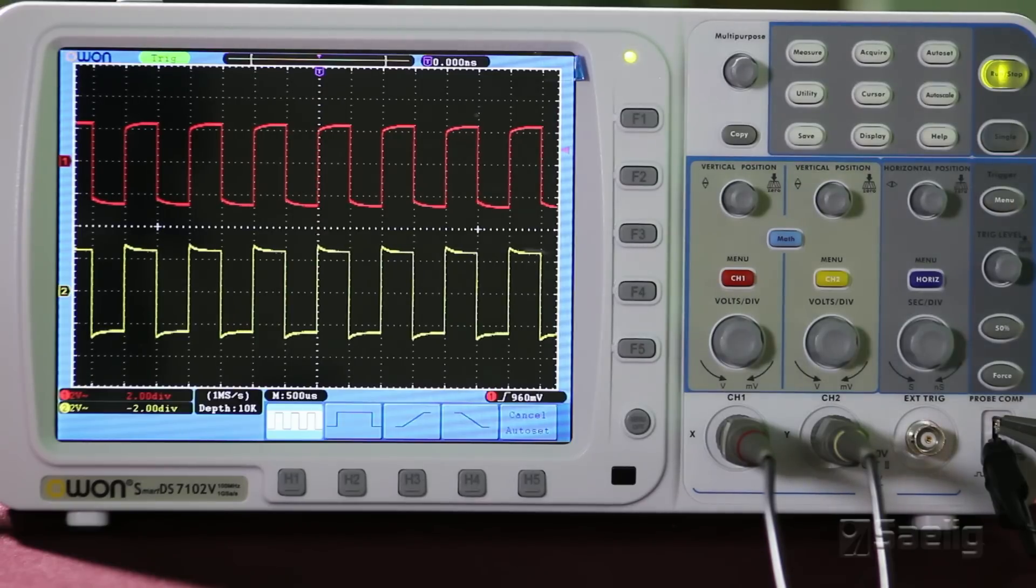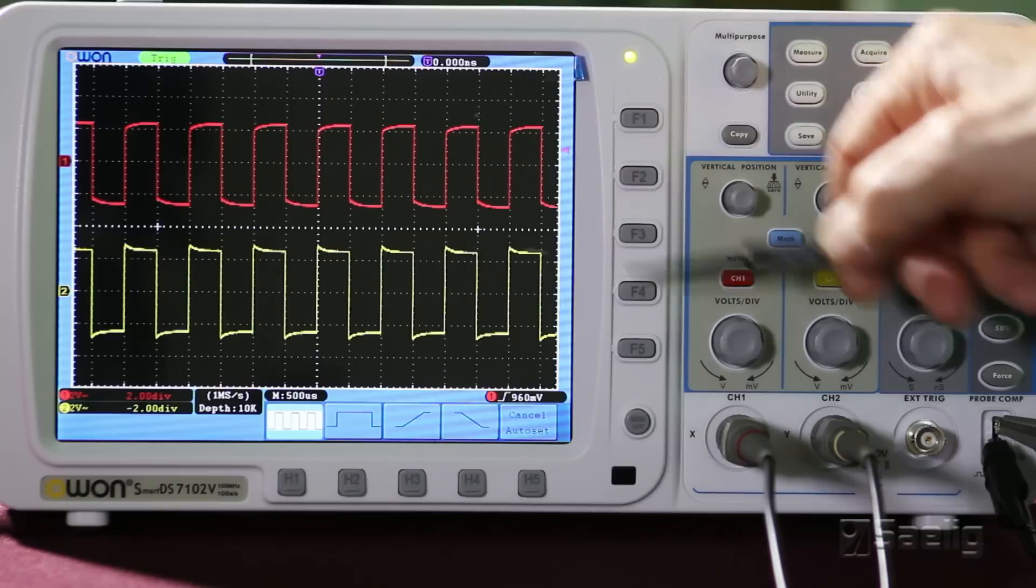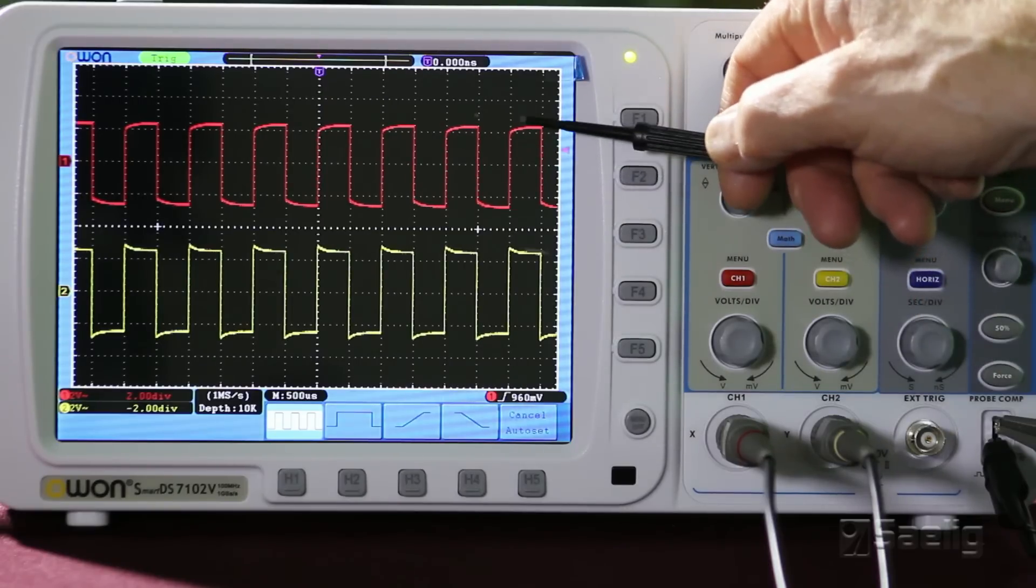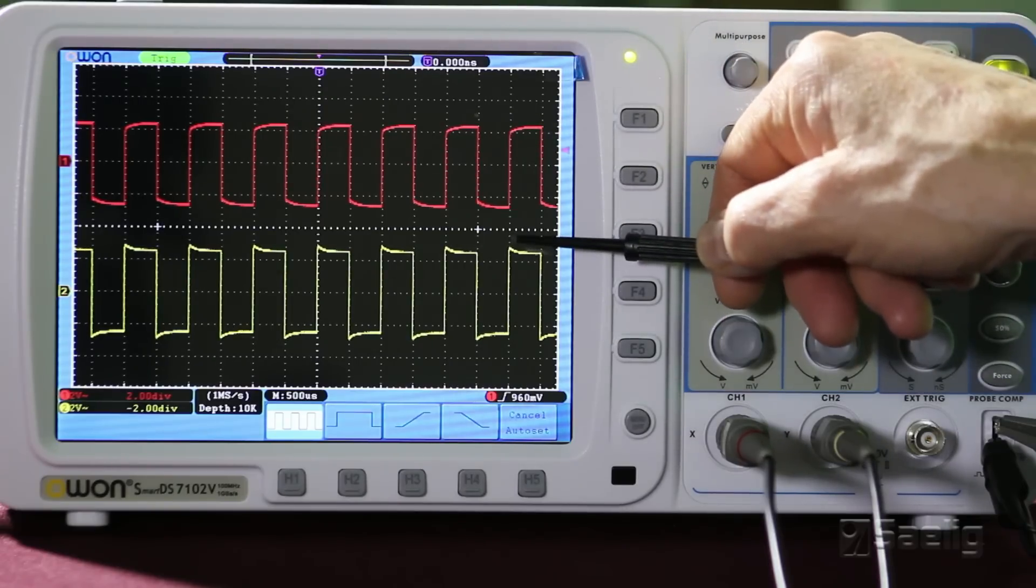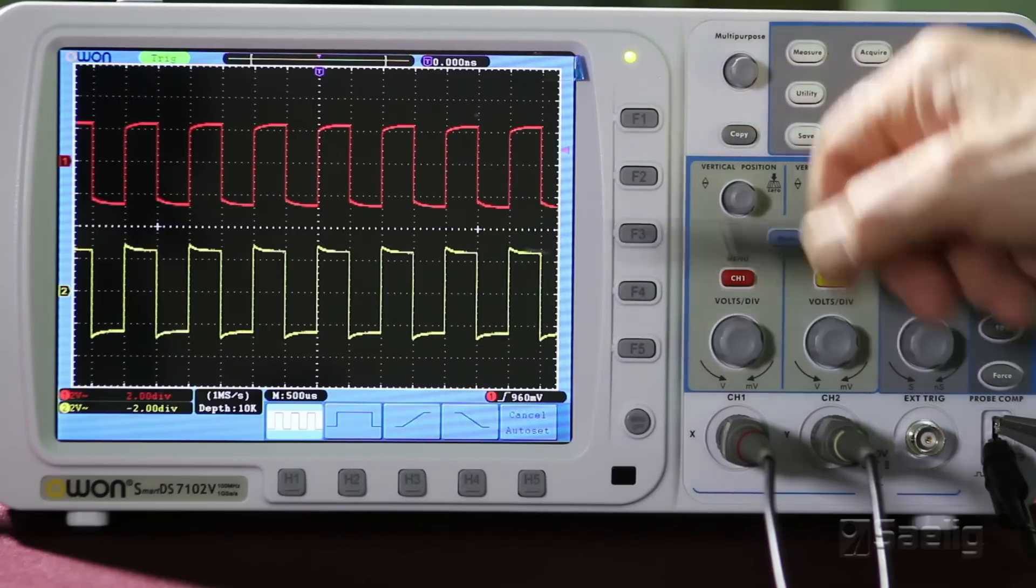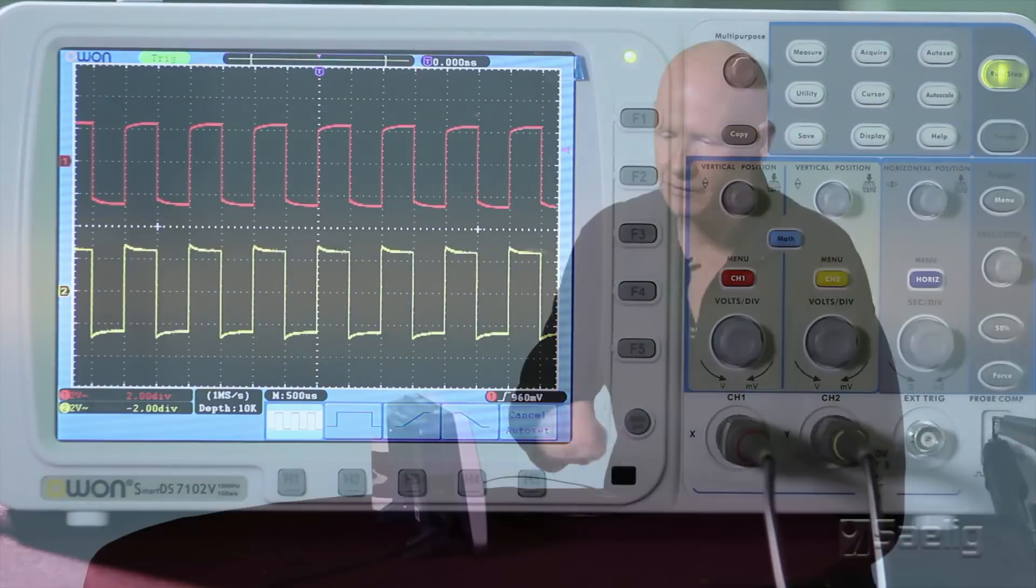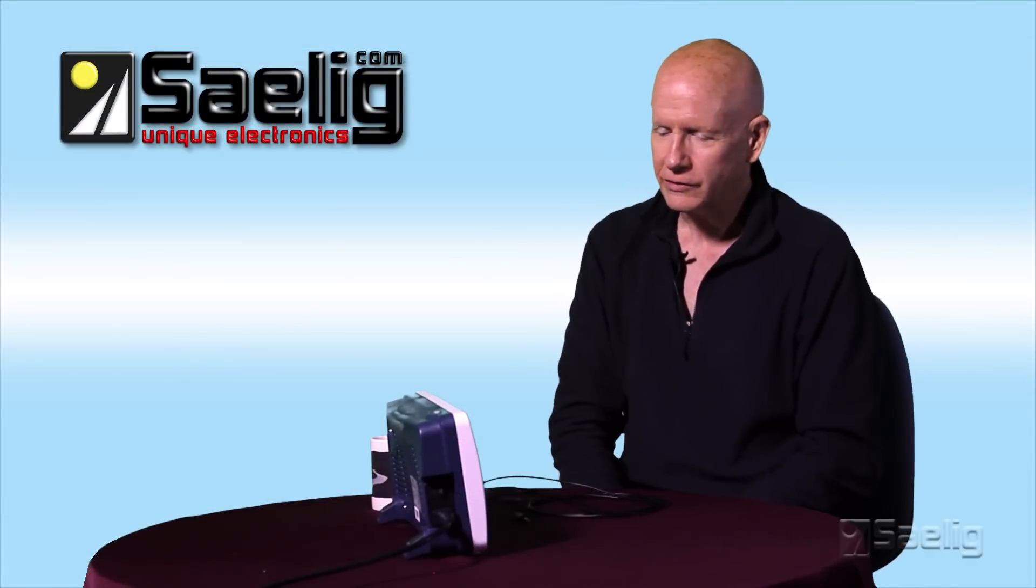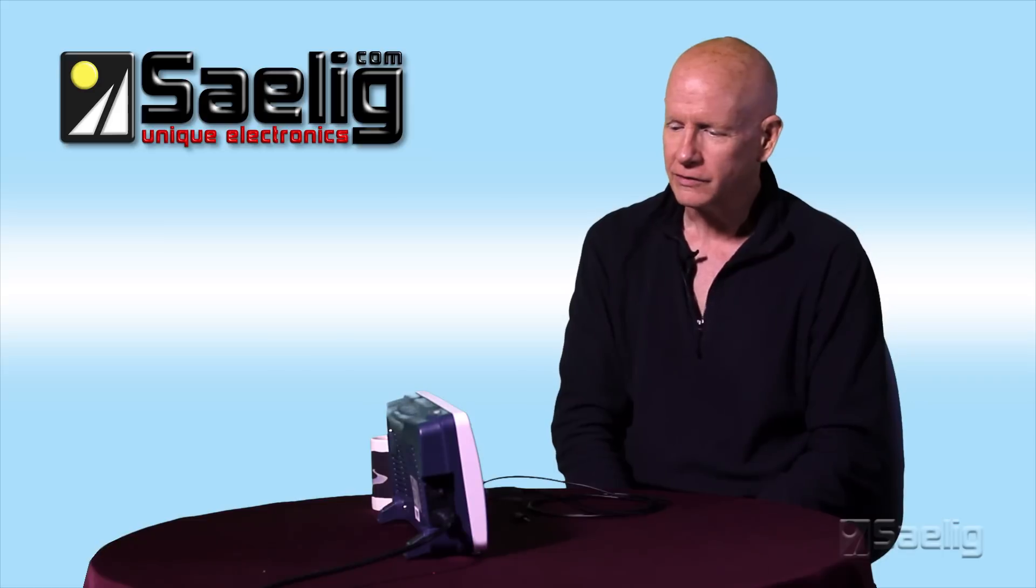We can see that both of these probes need to be compensated. This one's a little, the edge is a little rounded. This one is, there's a little bit of overshoot and undershoot on channel two. So in our next program, we're going to look at how to adjust the probes so that you get some really nice looking signals.